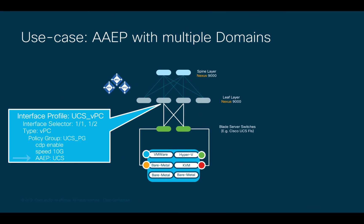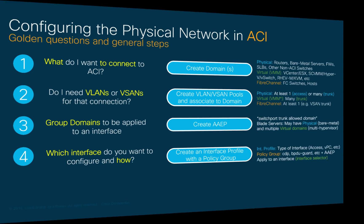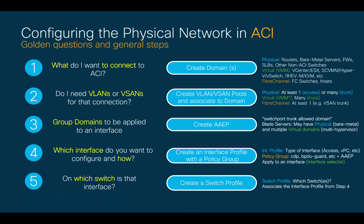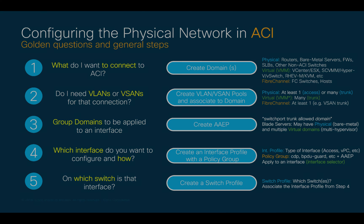That policy group will also have the AAEP we created in step 3. And the end result would look similar to what is displayed in this diagram, which is based on the previous example on UCS. Finally, and as part of step 5, we will tell ACI which switch we want to apply that interface profile to, by creating a switch profile that contains our configuration from step 4.